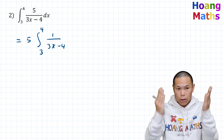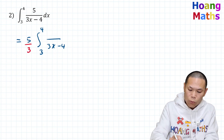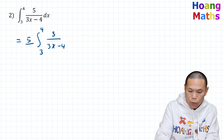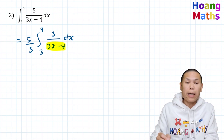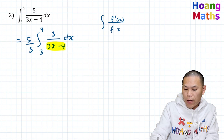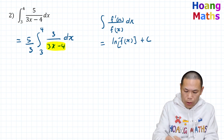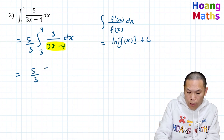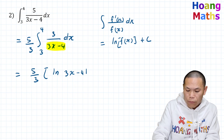Differentiating 3x minus 4 gives me 3. So if I multiply by 3 on top and divide by 3, then I have 5 over 3 times the integral of 3 over 3x minus 4 dx. Now if I differentiate the bottom, 3x minus 4, it gives me 3. So integrating f'(x) over f(x) gives ln|f(x)|. So this will give me 5 over 3 times ln|3x minus 4|, evaluated from 3 to 4.